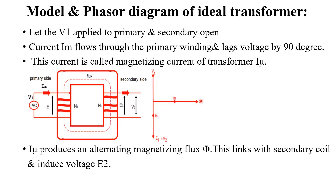Here you can see the phasor diagram for an ideal transformer. V1 is the applied voltage and IM is the current drawn by the transformer. Since the secondary winding is open, and the windings of an ideal transformer are purely inductive, in the case of a pure inductor, current will lag the applied voltage by exactly 90 degrees. So you can see in the phasor diagram this angle will be exactly 90 degrees. V1 will be the voltage applied across the primary winding, IM will be the current through the primary winding, and due to the magnetizing component of current IM, flux phi will set up in the primary winding.